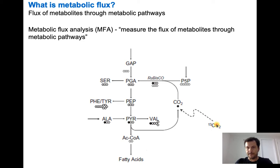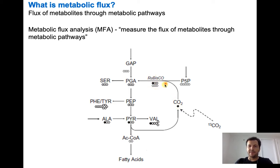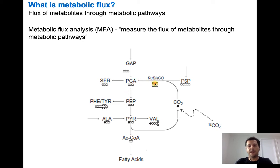The CO2 is labeled with 13C instead of 12C. This carbon is going to be incorporated into the metabolites of plants by the fixation of RuBisCO — the main enzyme that fixes CO2 in the Calvin-Benson cycle. Then by mass spectrometry or nuclear magnetic resonance, we can look at the other metabolites that contain this labeled carbon.